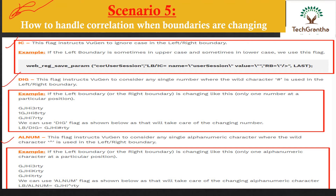There are three functions for this: IC, DIG, and LLM. The IC function ignores case sensitivity on the left and right boundaries — it doesn't matter if it is upper case or lower case. We use the function web_reg_save_param, provide the parameter name, and give the left boundary followed by /IC to ignore case sensitivity.